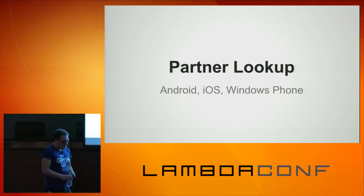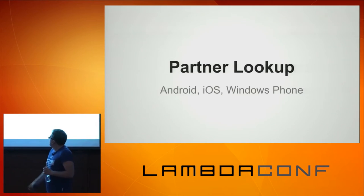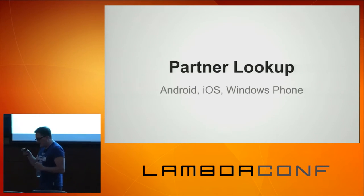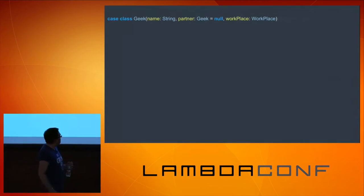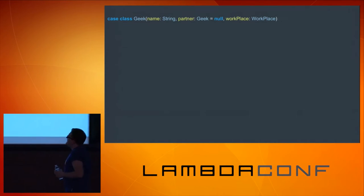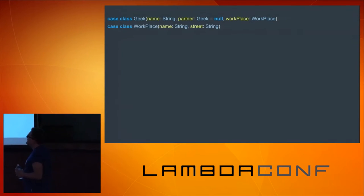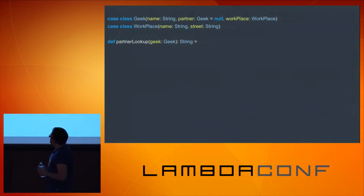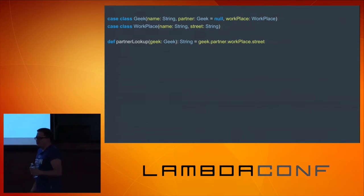We came up with this idea that we're gonna do an application for mobile devices, Android, iOS, and for the 10 users out there, also for Windows Phone. It's gonna allow us to quickly find out where our partners are, like my girlfriend or my wife. So it's a simple implementation: imagine we have a geek. Geek has a name, he also has a partner, and he works at some place, and the workplace has a name, and there's also a street. We have to implement our main business logic: the partner lookup method, which takes a geek, and implementation is straightforward. We take the partner, we take the workplace, and we return the street.